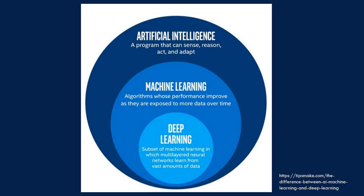Artificial intelligence is the common name for a program that can sense, reason, act, and adapt. Machine learning is a subset of artificial intelligence which includes algorithms whose performance improves as they are exposed to more data over time. Deep learning is a subset of machine learning in which multilayered neural networks learn from vast amounts of data — some kind of artificial intelligence magic.